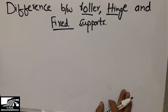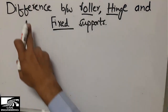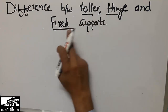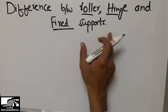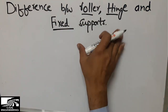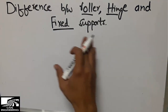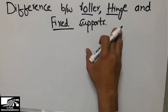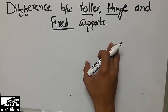Hello guys, welcome to the Civil Engineering YouTube channel. Please subscribe to our channel for more civil engineering videos. Today our topic is about what is the difference between a roller support, hinge support, and fixed support. It's really important to know about the difference between these three kinds of supports, as every civil engineering structure is being supported on these three types of supports.